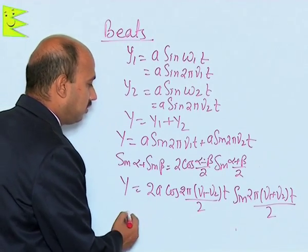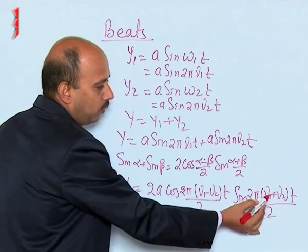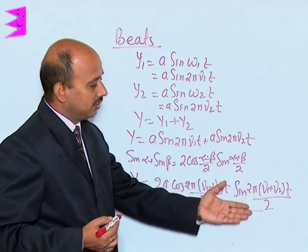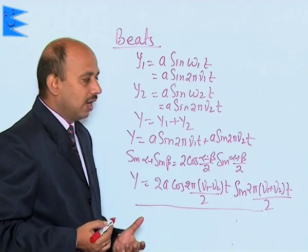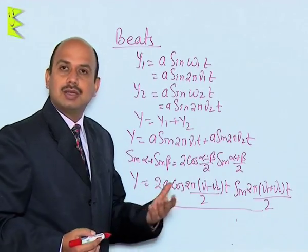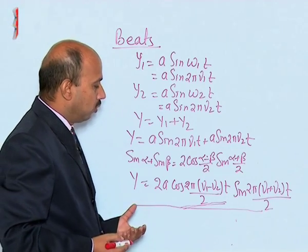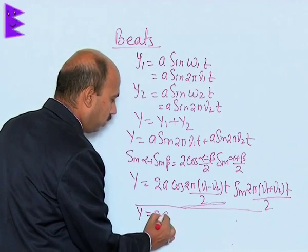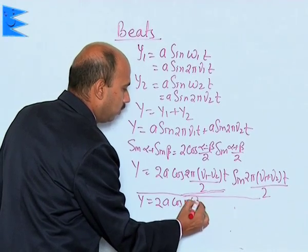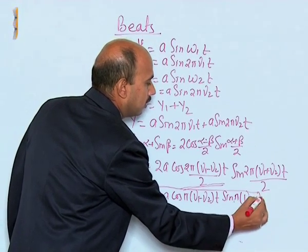This is the equation for beats formation. Note that (ν1 + ν2)/2 does not vary with time because it is the average of the two frequencies, and if there is not much difference between ν1 and ν2 this quantity does not vary with time. So the quantity (ν1 − ν2) will be varying with time. We can write y = 2a cos(π(ν1 − ν2)t) sin(π(ν1 + ν2)t).